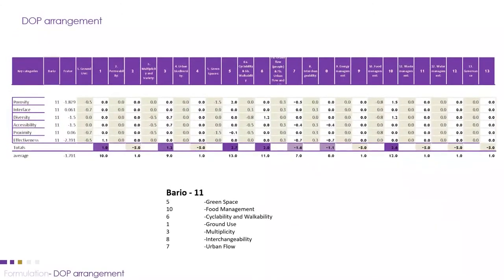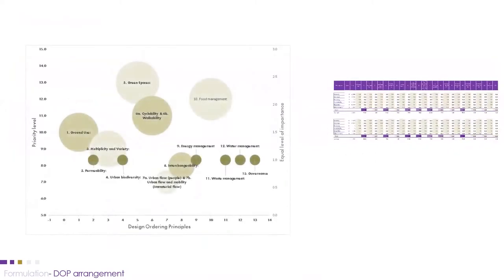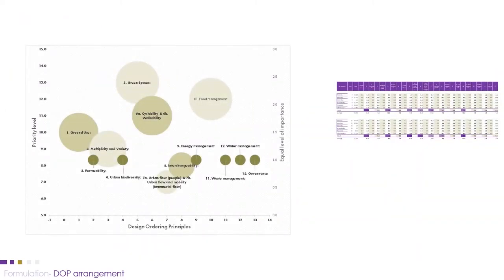The next step was arranging the design authoring principles (DOPs). We provided a point-based arithmetic calculation where DOPs are arranged horizontally and key categories vertically. The average point was calculated, and from this we obtained green space in first place, followed by food management, cyclability, workability, ground use, and the other DOPs. This diagram shows the arrangement of DOPs based on the calculation and their priority.